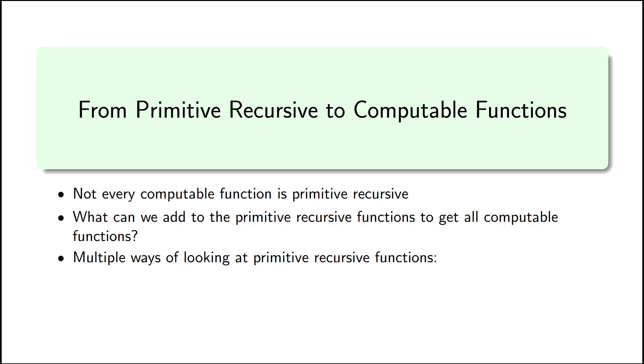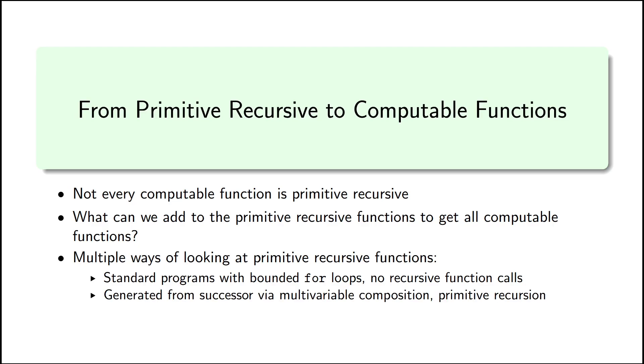In the first video in this series, we saw multiple ways of looking at the primitive recursive functions. We saw that we could reason about primitive recursive functions in a pretty robust programming language, one with bounded for loops and no recursive function calls, but everything else that you could hope for. And we also defined our primitive recursive functions more abstractly in terms of primitive recursion, defining f of x plus 1 in terms of f of x via other functions we had already shown to be primitive recursive.